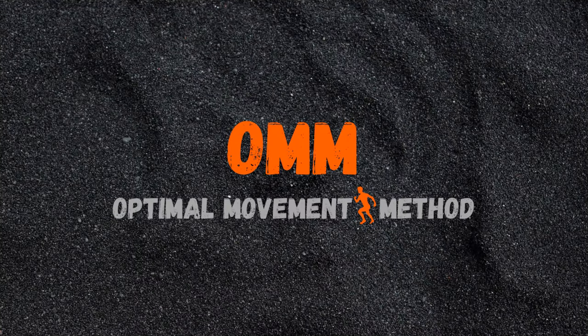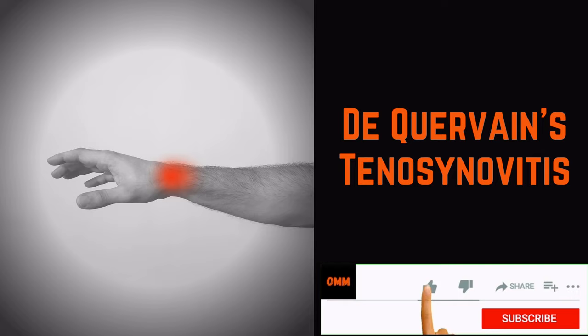Hello everyone and welcome to Optimal Movement Method. De Quervain's tenosynovitis is a painful wrist condition where two tendons running along the thumb side of the wrist get inflamed.